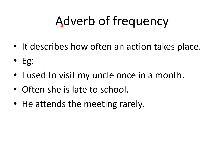Adverb of frequency shows how often the action takes place. For example, 'I used to visit my uncle once in a month' — 'once in a month' describes how often I visit my uncle. 'He attends a meeting rarely' — rarely means once in a while, after a very long time. 'He never comes to the meeting' — never means the action does not happen at all.